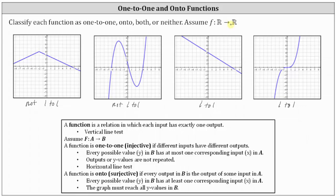For the first graph on the left, notice how the graph does not reach a y value greater than four, and therefore the function is not onto. The second graph reaches all the y values — notice how the graph goes up approaching infinity and down approaching negative infinity along the y-axis with no holes or breaks, and therefore the function is onto. Next, we have a line that goes up forever and down forever without breaks — it will hit all y values, so the function is onto. Similarly, for the cubic function on the far right, the graph goes up forever and down forever without any holes or breaks, hitting all possible y values, and therefore the function is onto.